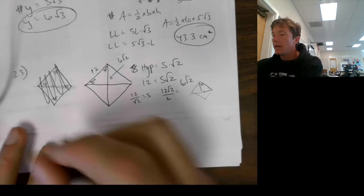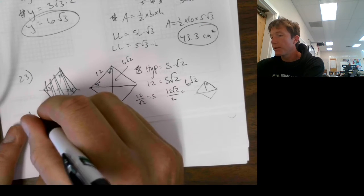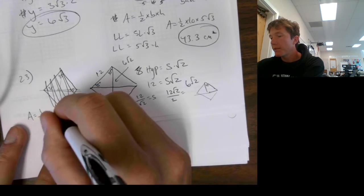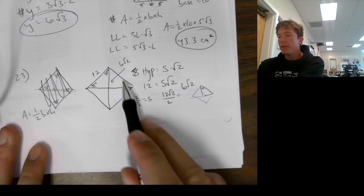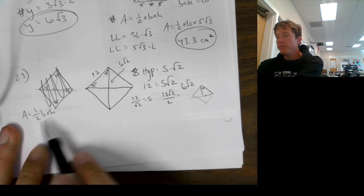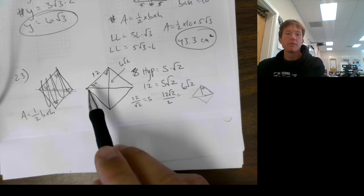Well, I did that so I can plug it into this area formula. This is one-half base times height, which will give me this triangle here. And if I just multiply that by 2, I can get the whole rhombus.